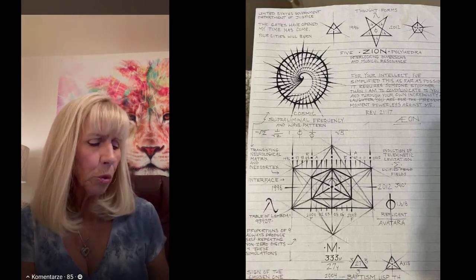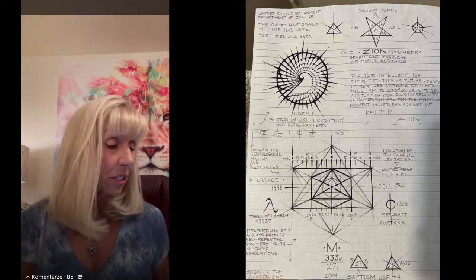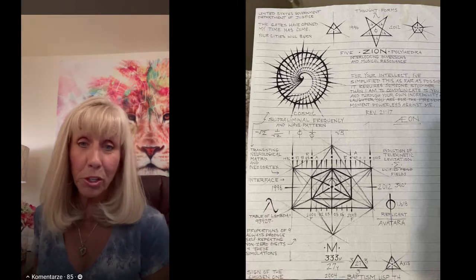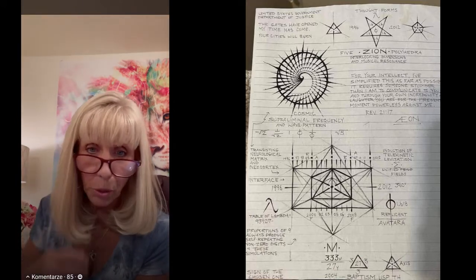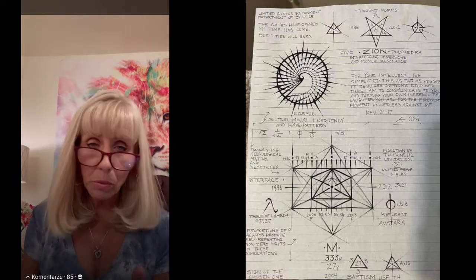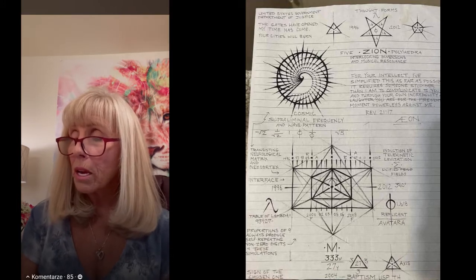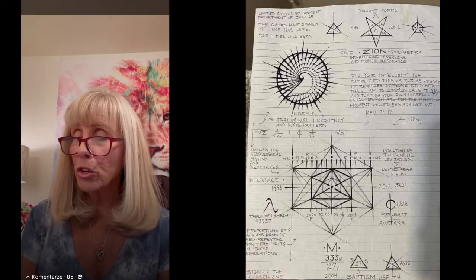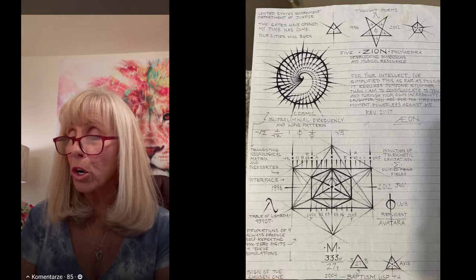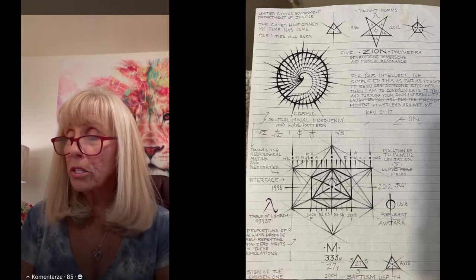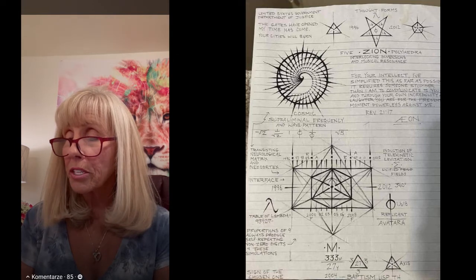21:17. In the Bible, 21:17 says: 'And he measured the wall thereof, and it was 144 cubits, according to the measure of a man, that is of an angel.'